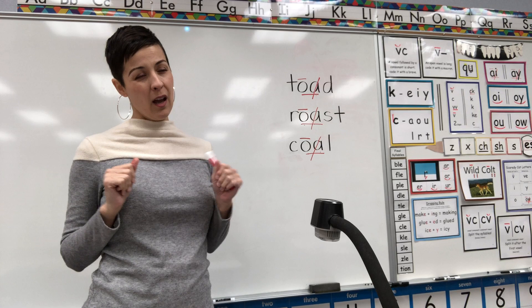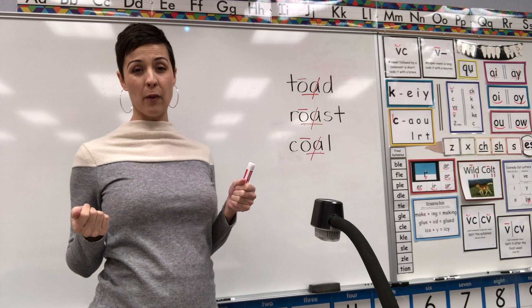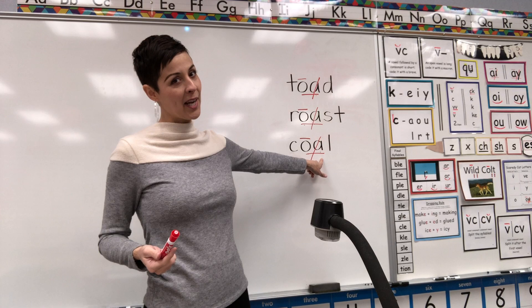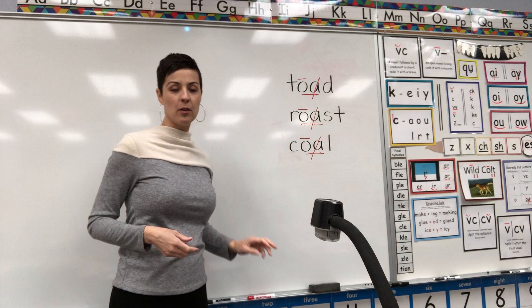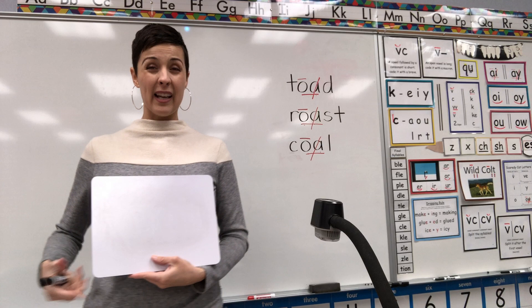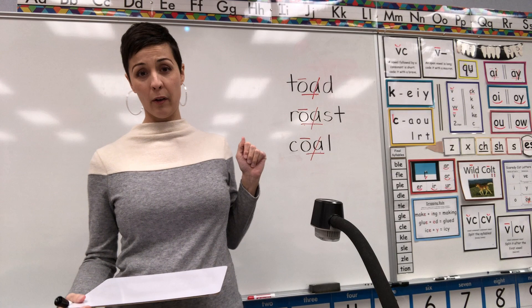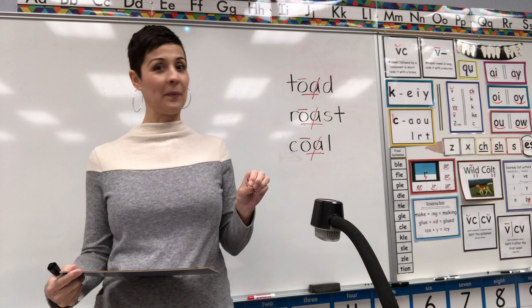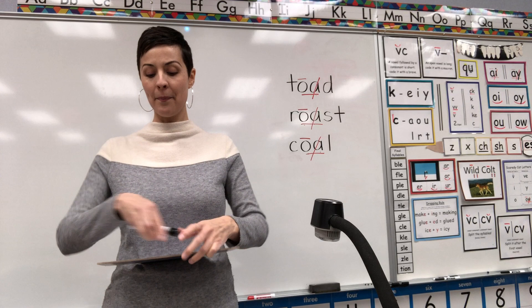Now some kids are going to say: Miss Smith, didn't we learn yesterday that O says O when it's a wild cult word followed by two consonants, like in the word OLD? Yes. But O-A can also say O if it's next to an A — but it will be a digraph, not a wild cult word. Today all of our words that say O will be spelled with digraph O-A.